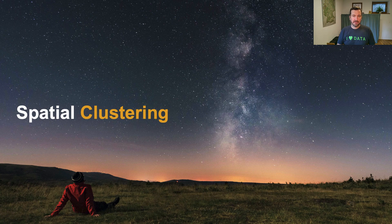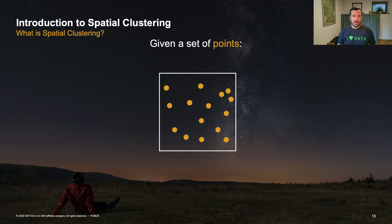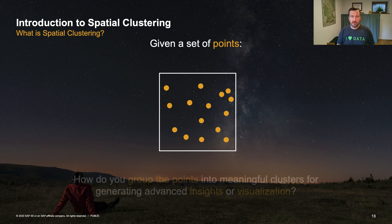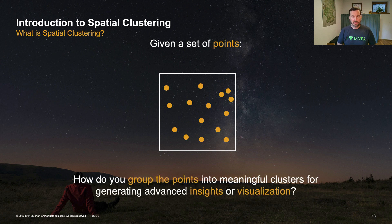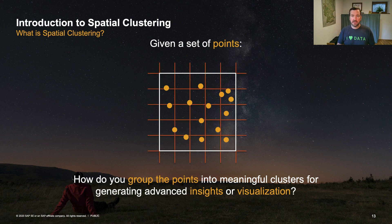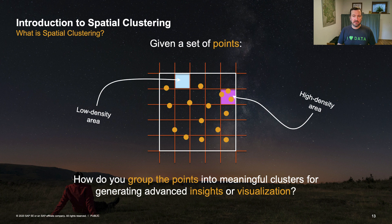One type of aggregate function that enables more sophisticated spatial analytics or even spatial machine learning is spatial clustering. What is spatial clustering? The problem in a nutshell: given a set of points, how do you group those points into meaningful clusters for generating advanced insights or visualizations? One answer is simple grid clustering — you apply rectangular grids to the plane and aggregate the number of points per grid cluster. This gives you the insight that certain clusters are high-density areas with many points, while others are low-density areas.